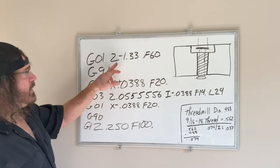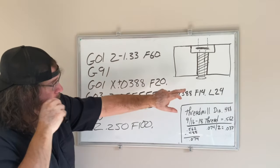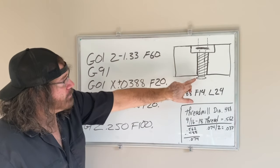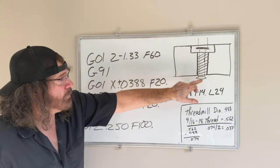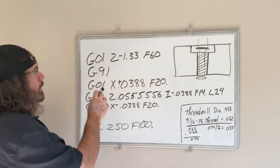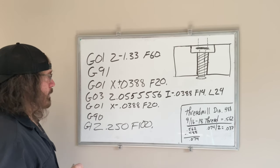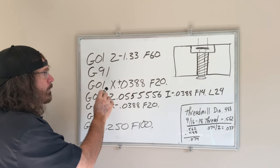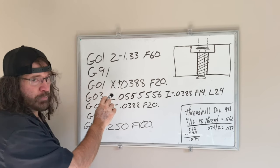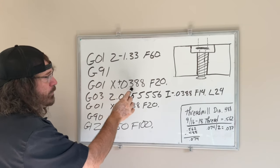But if I don't, I want to have this in just in case. So the part of the thread mill is actually going to feed down Z negative 1.33. So that's going to get below the bottom of the part. I'm going to switch over to incremental mode.